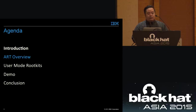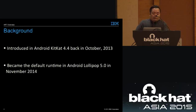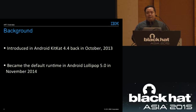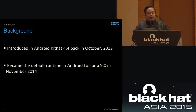ART was first introduced in Android KitKat 4.4 back in October 2013 as an experimental version, where you could select which runtime to use. In November of last year, with the release of Android Lollipop 5.0, it became the default runtime. So if you buy a new phone with Lollipop, that's the runtime in use.